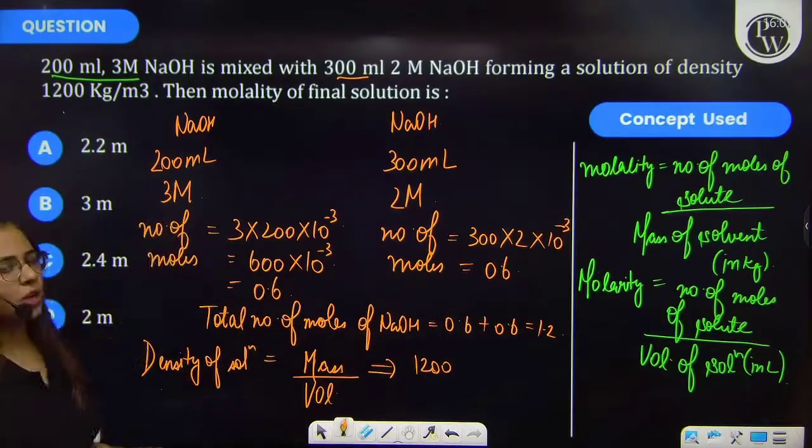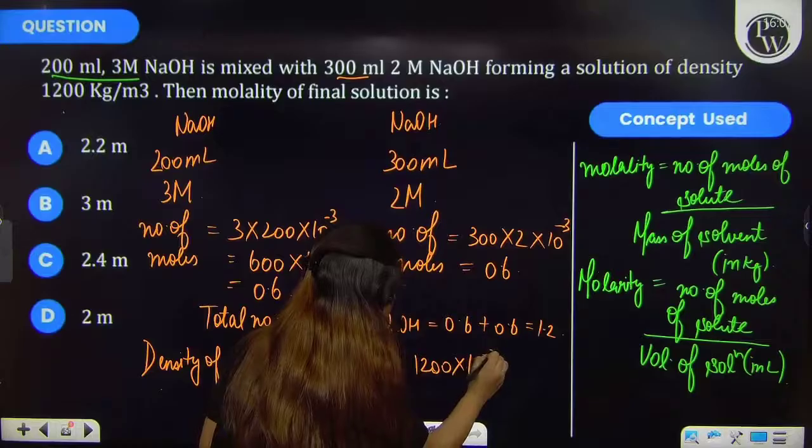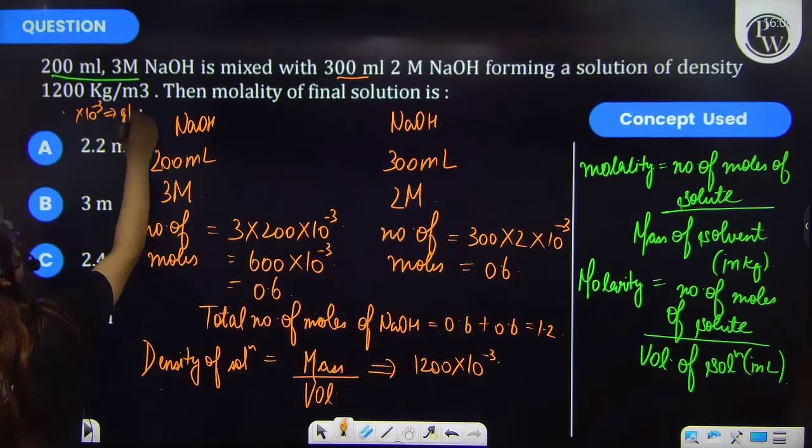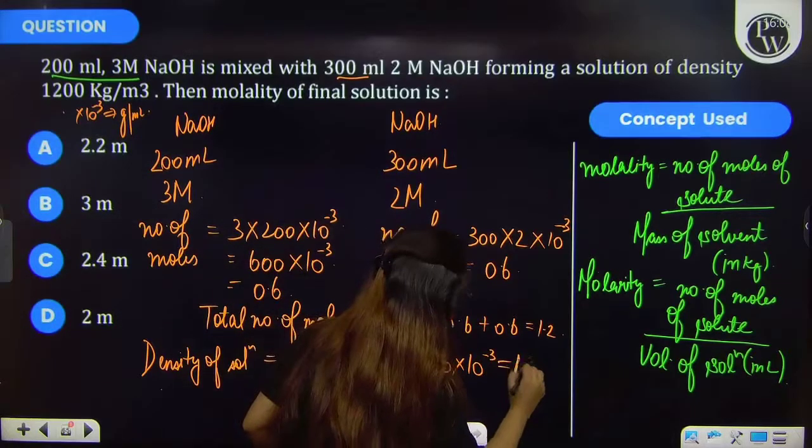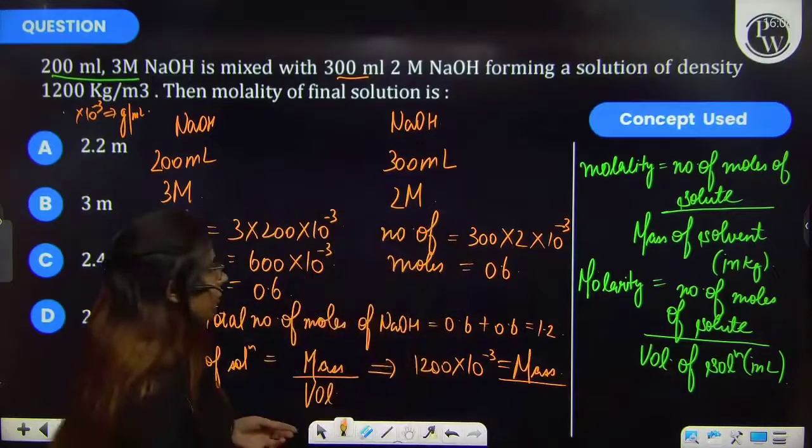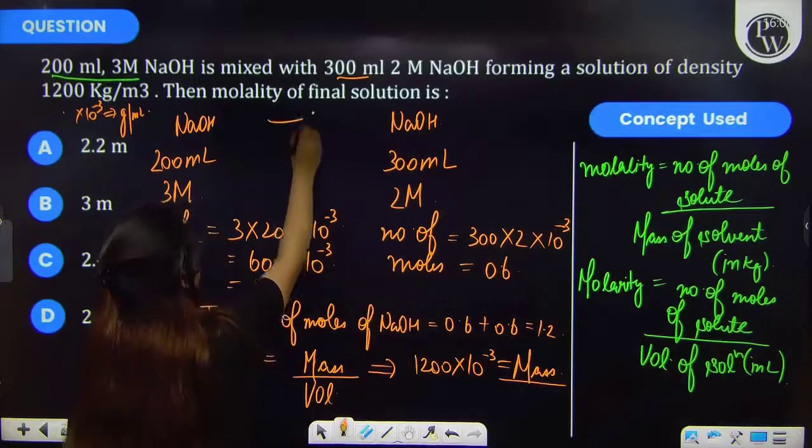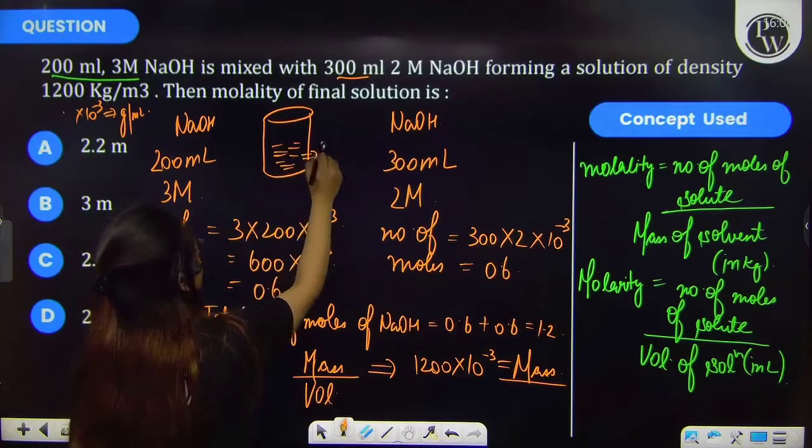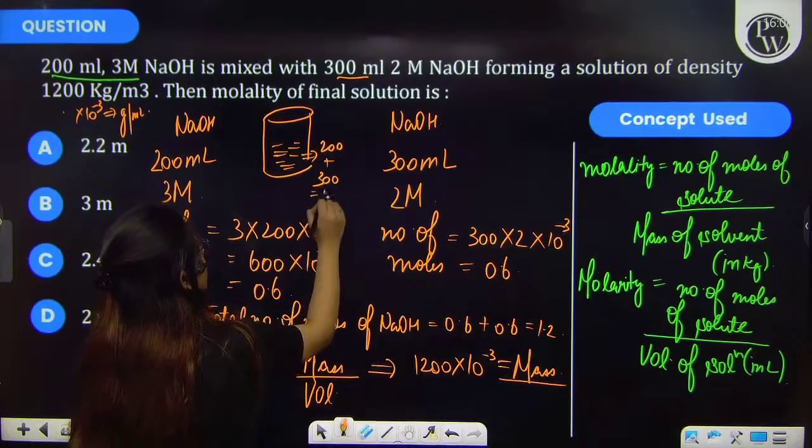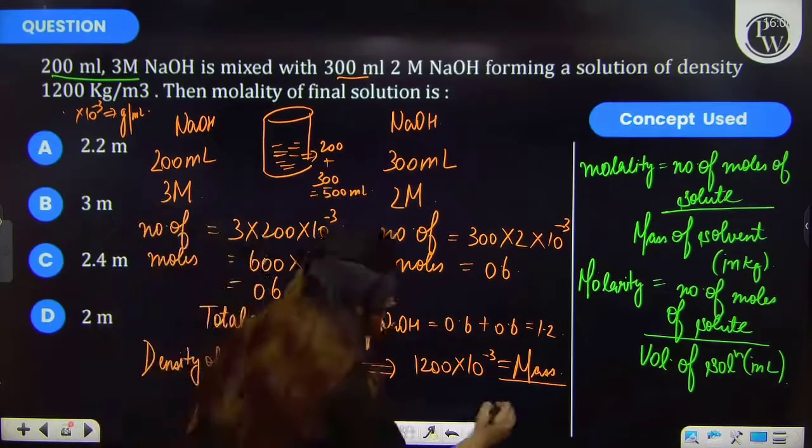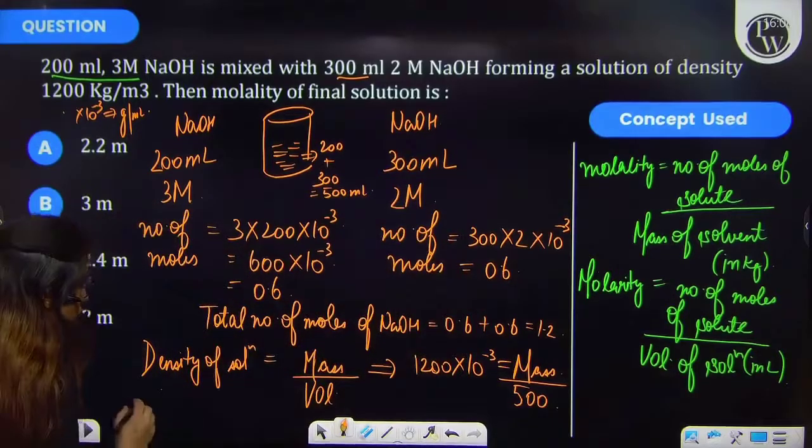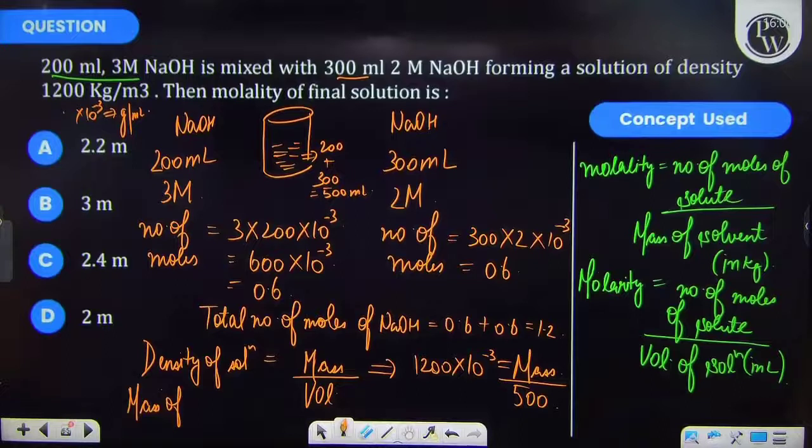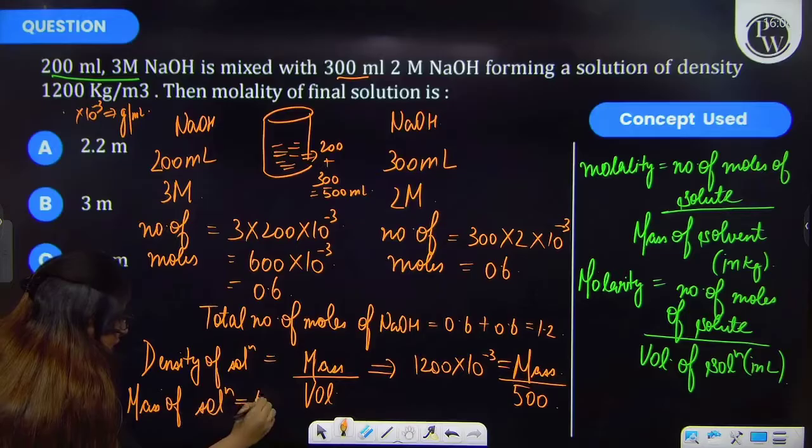So density given is 1200 kg per meter cube. And since it is in kg per meter cube, you have to multiply by 10 raised to the power minus 3 in order to convert it into gram per ml. Now mass of solution you have to find. And volume it will become - since this is the solution now containing both NaOH solutions, their volumes will add. That means 200 plus 300, and therefore it will become 500 ml.